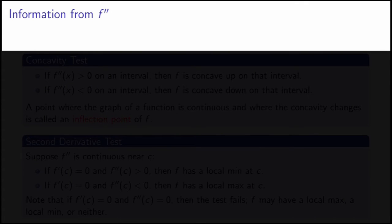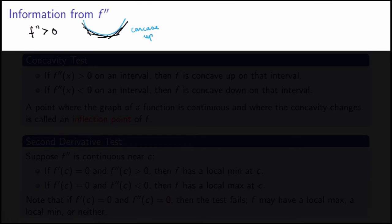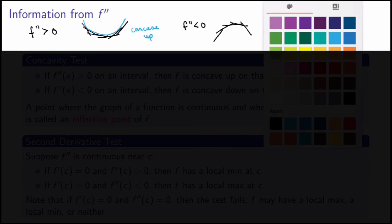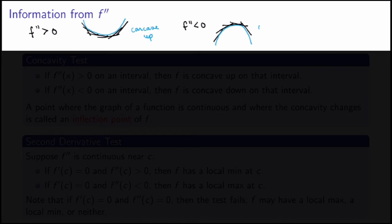What does the second derivative have to say about f? If f double prime is positive, the slope of the tangent lines is increasing, and the function opens upward — we say it is concave up. On the other hand, if the second derivative is negative, the slope of the tangent lines is decreasing and the function opens downward — it is concave down.